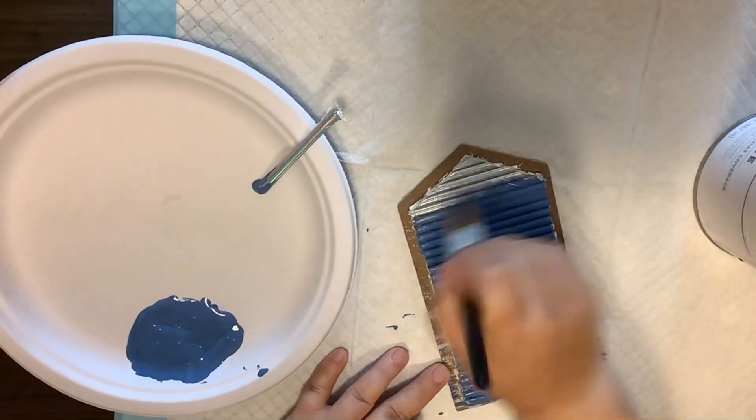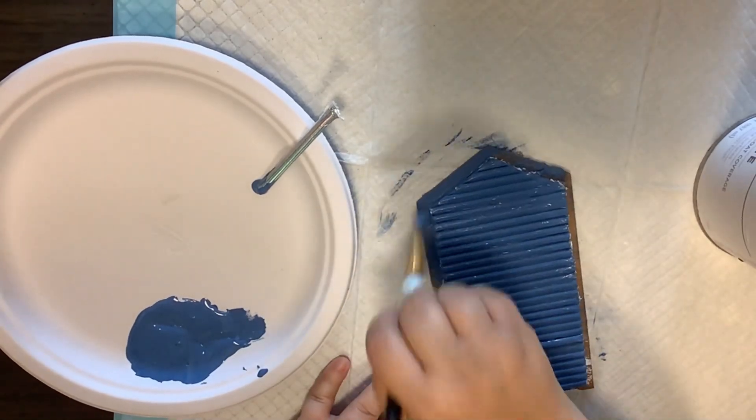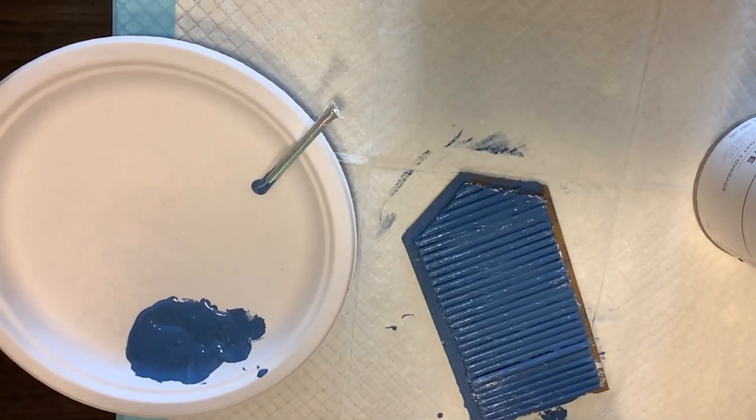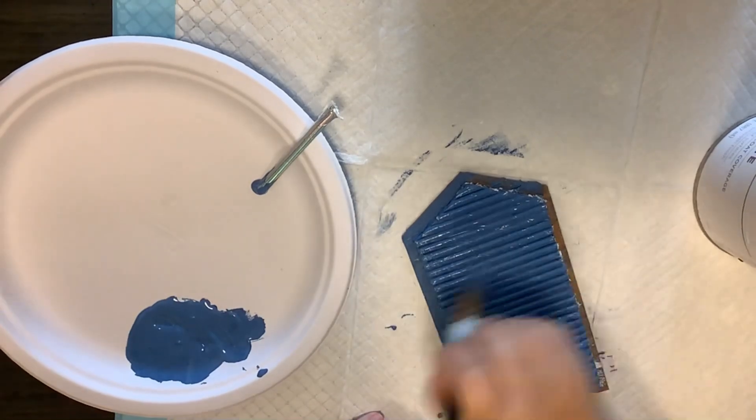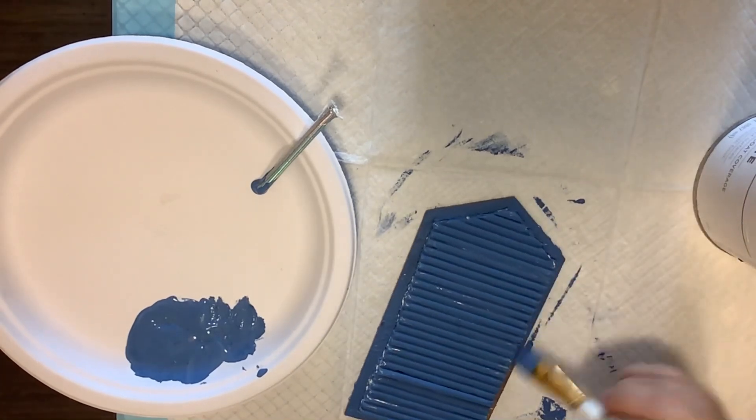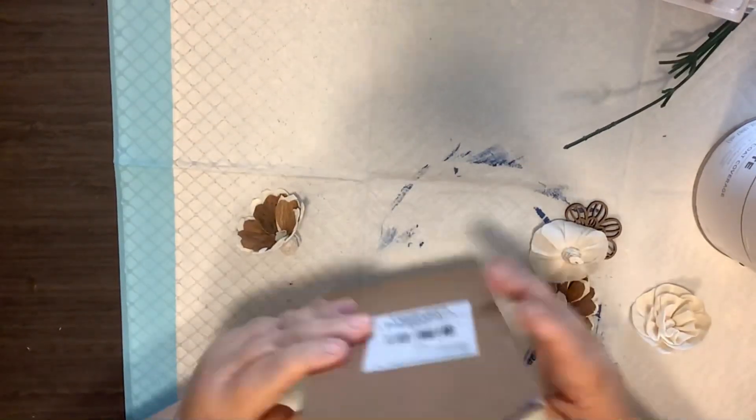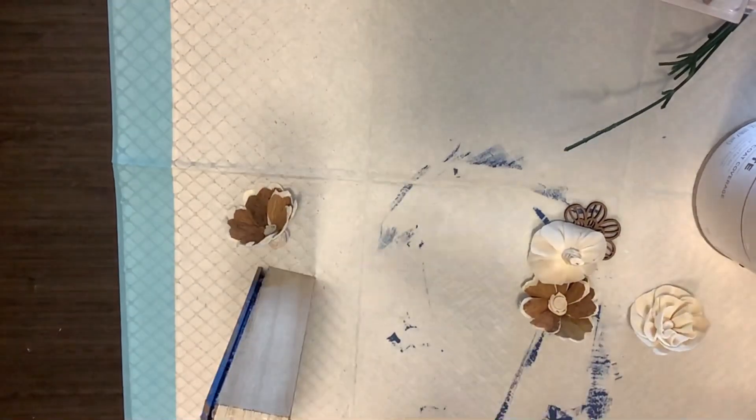Then I just take - I mix some Ocean blue and some white Waverly chalk paints and got this little color. The Ocean blue was just a little dark, I wanted it a little lighter. I do two good coats on this because the metallic of the silver wants to shine through, so we do two good coats.